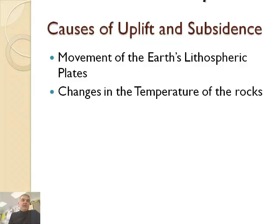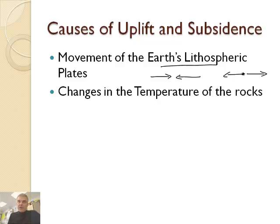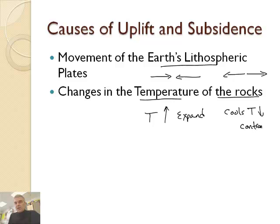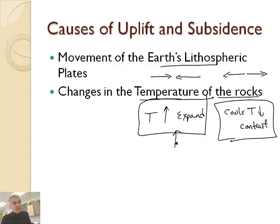What causes uplift and subsidence? The movement of the Earth's lithospheric plates — converging plates and diverging plates probably cause uplift and subsidence. Also, you can change the temperature of rocks: if a rock gets hot, the temperature goes up and it will expand; if it cools, the temperature goes down and it will contract. Contraction would cause subsidence, and expansion is caused by increased temperatures. You see this in volcanoes because the temperature is rising, which causes uplift. So probably near hot spots you'll see quite a bit of uplift as well.